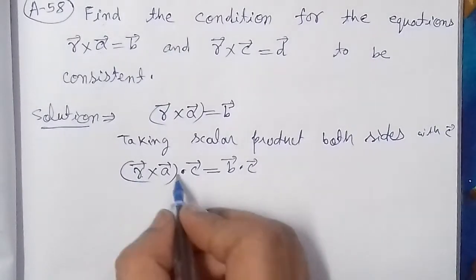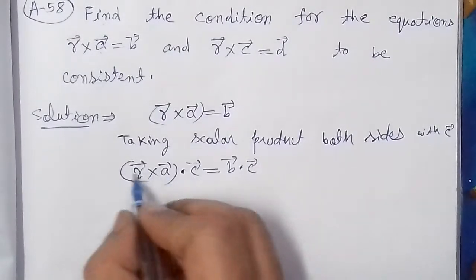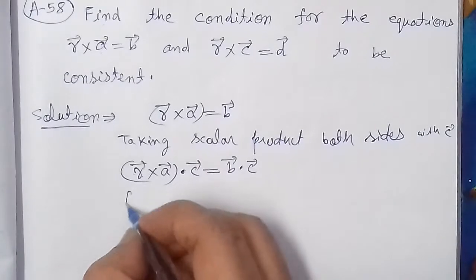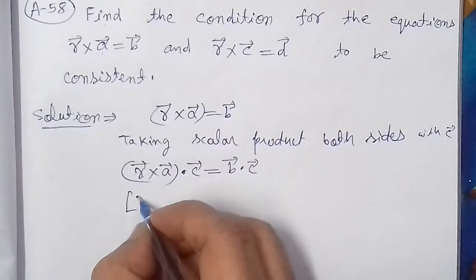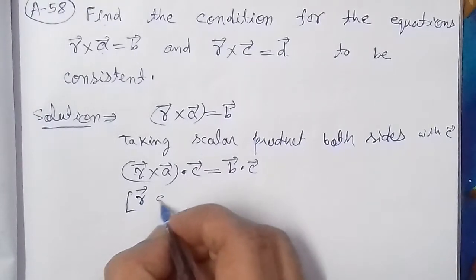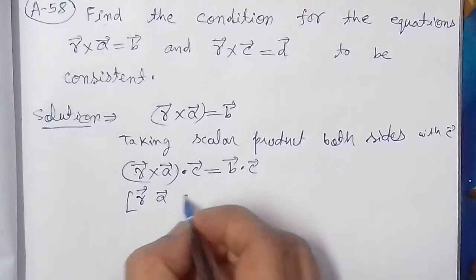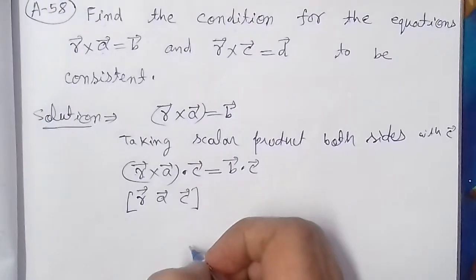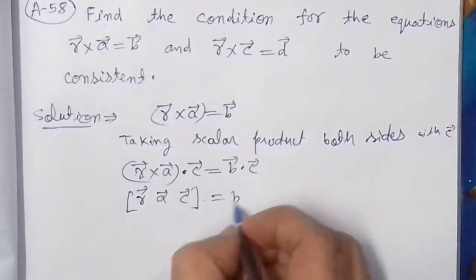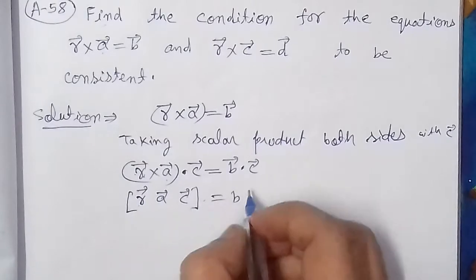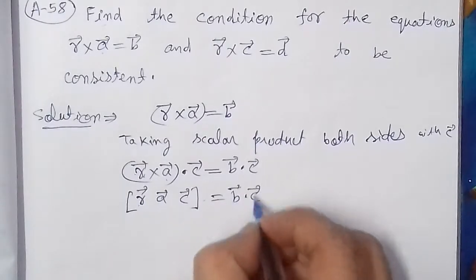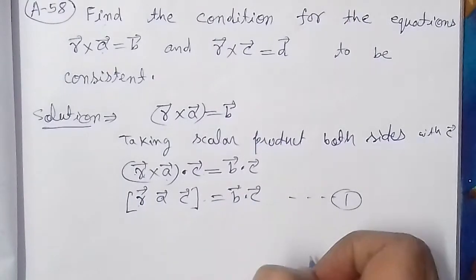जब तीन vectors इस तरीके से हों — दो vectors cross में और एक dot में — तो इसे scalar triple product कहते हैं। इसको square bracket में denote करते हैं: [B⃗, A⃗, C⃗] = B⃗ · C⃗। यह value आ गई — इसे equation number 1 मान लेंगे।